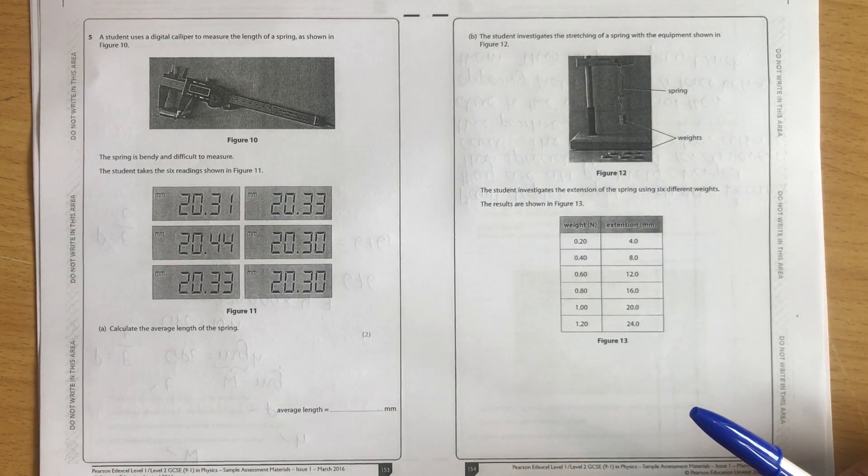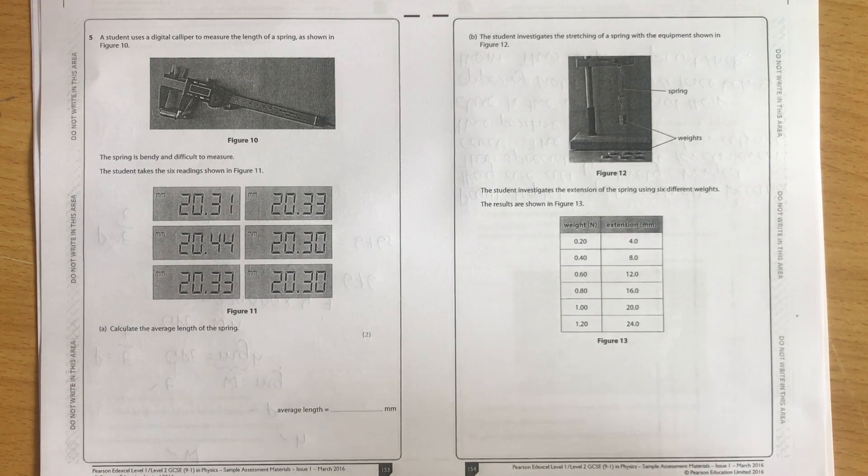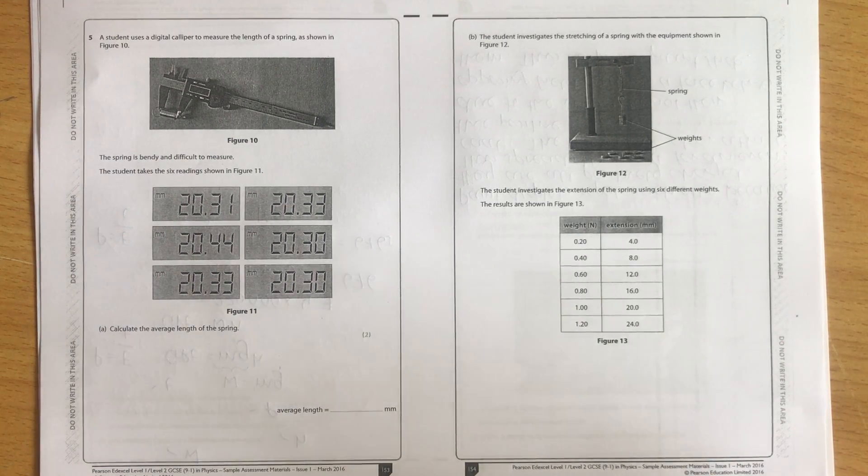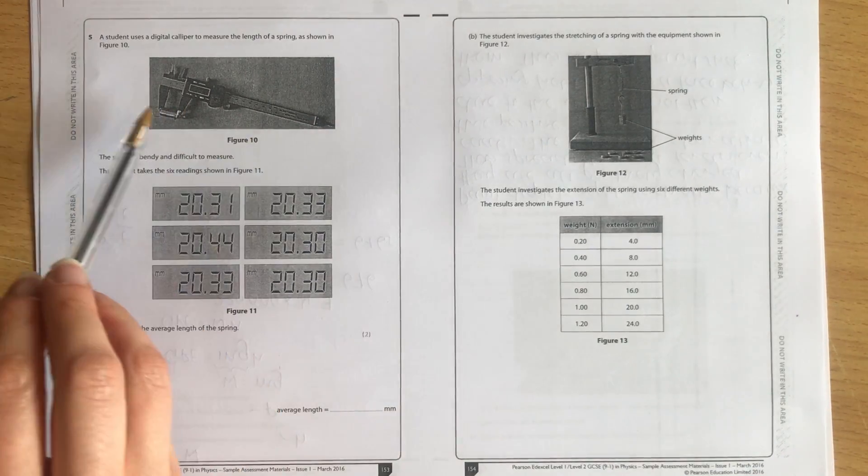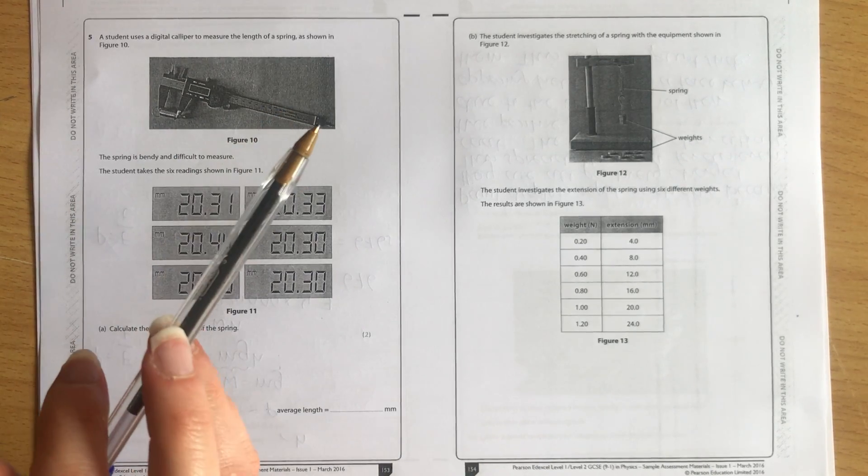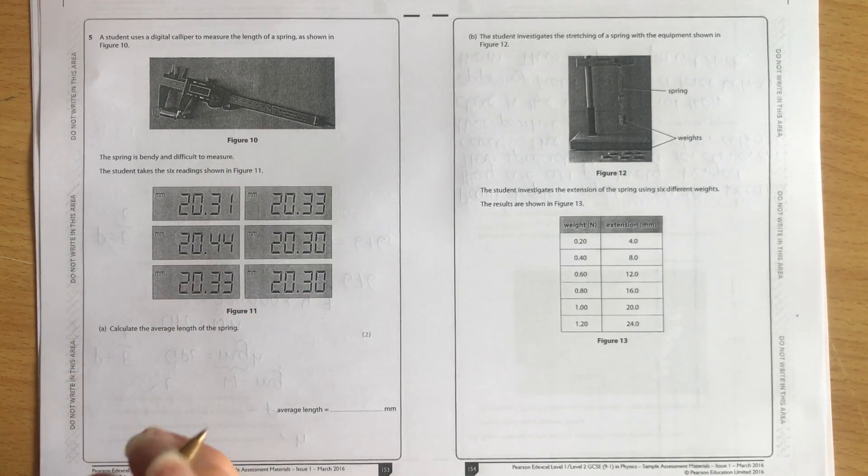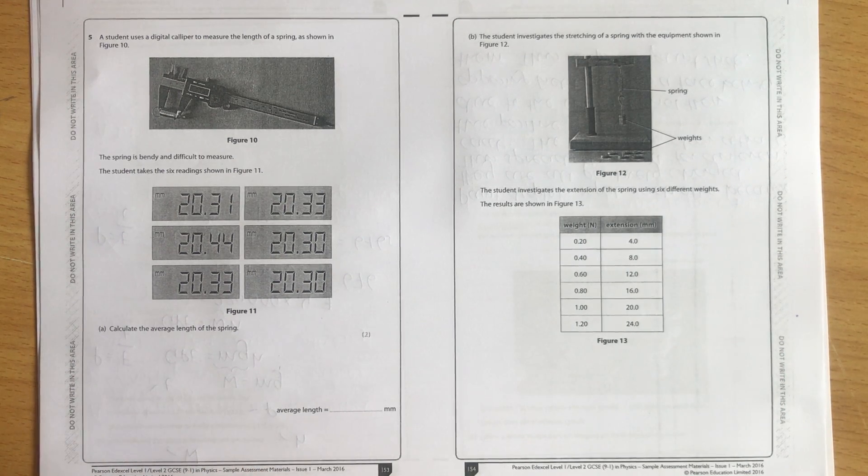This is question 5 of the Edexcel SAMS, that's the Sample Assessment Materials Paper 2, higher tier for physics, and we've got a practical question. A student uses a digital caliper to measure the length of a spring as shown in figure 10. This is a caliper, you use it more at A-level physics. The spring is bendy and difficult to measure. The student takes six readings shown in figure 11. Calculate the average length of the spring.